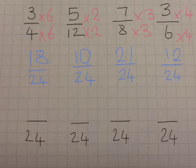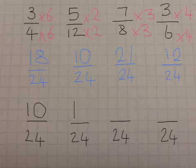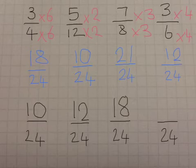Now, we are going to order them. This is the very last step of ordering fractions. The smallest number is 10. Then, it is 12. And then, the next highest number is 18. And then, it is 21.